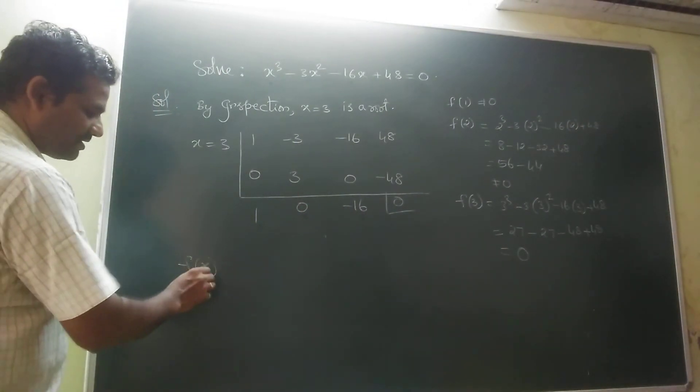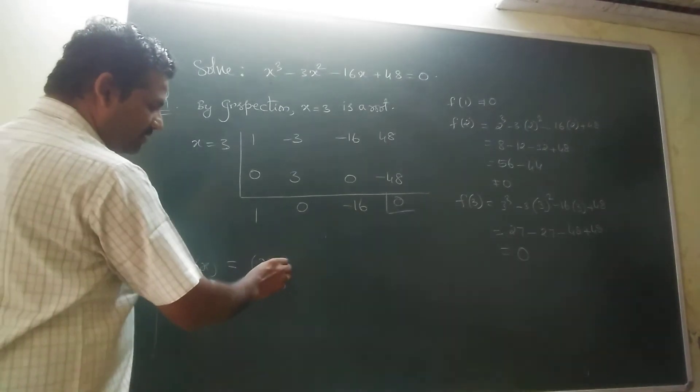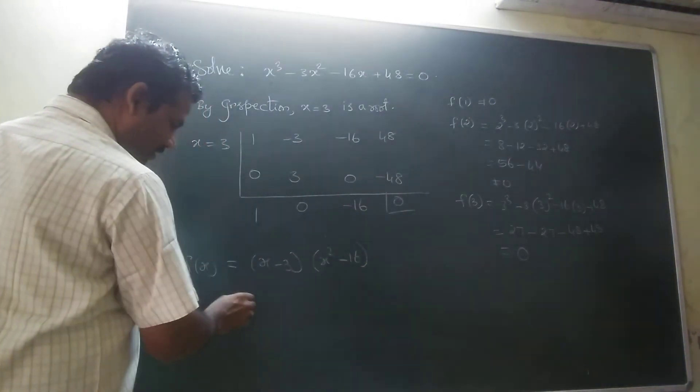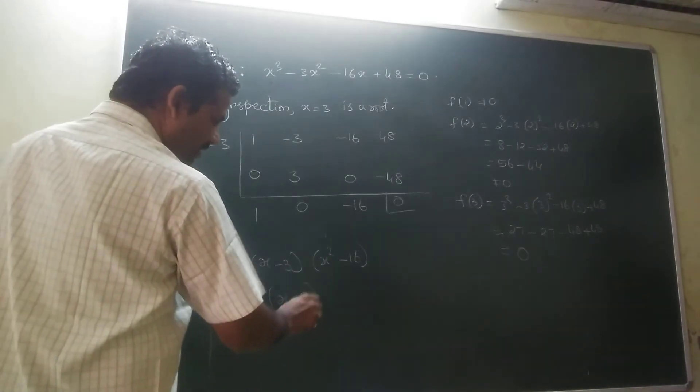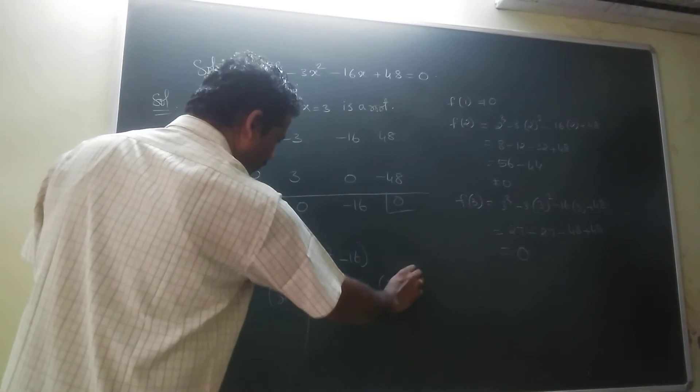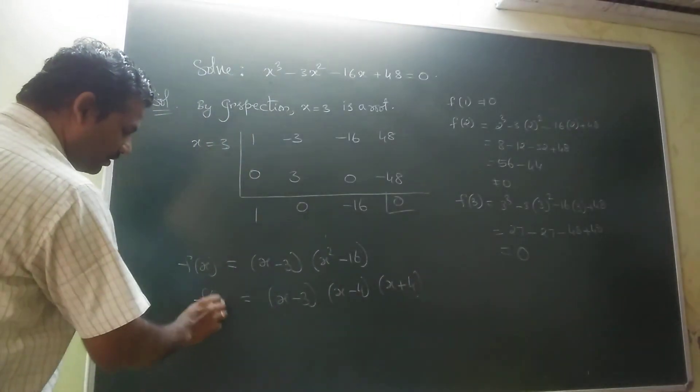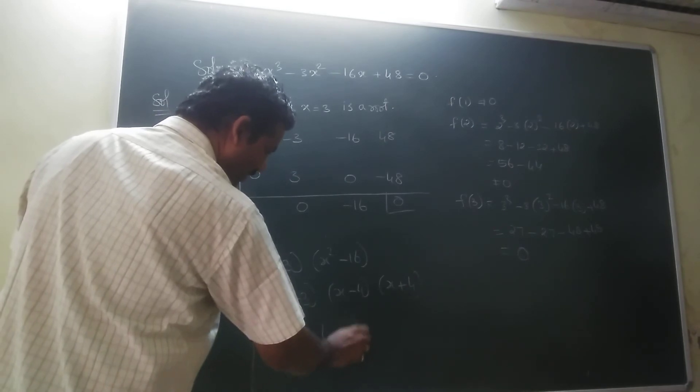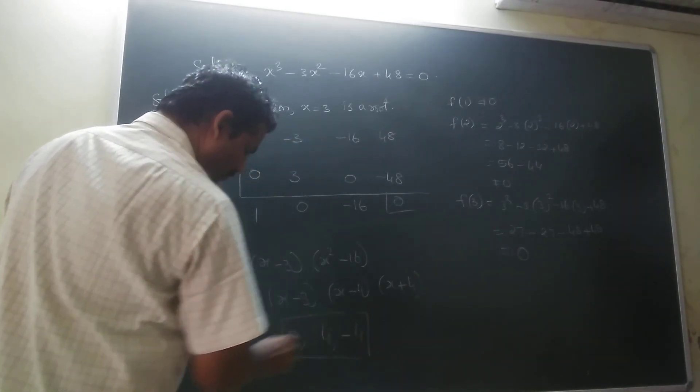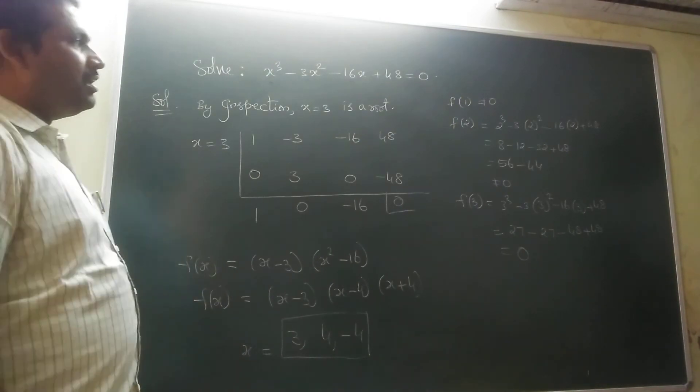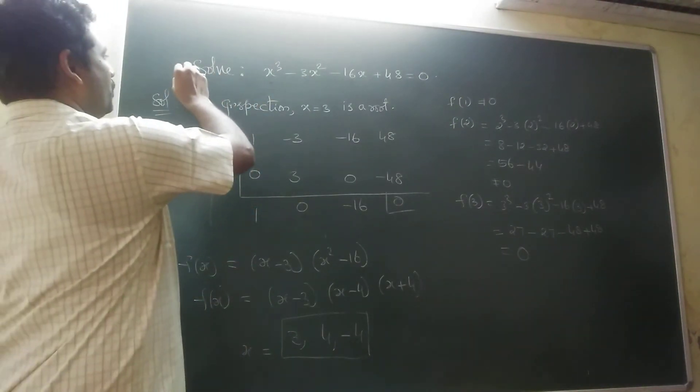Constant, x coefficient, x square. So f of x equal to x minus 3 into x square minus 16. That is equal to x minus 3 into x minus 4 into x plus 4. Then what are the roots of this equation? 3, 4, and minus 4 are the roots of this cubic equation.